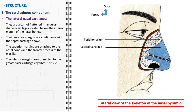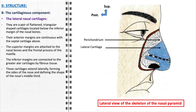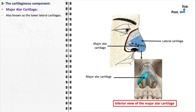This fibrous connection allows for flexibility and movement necessary for the functionality of the nose, particularly during facial expressions and breathing. The lateral nasal cartilages extend laterally, forming the sides of the nose and defining the shape of its middle third. The cartilaginous component of the nasal pyramid is further detailed by the inclusion of major alar cartilage, minor alar cartilage, and accessory nasal cartilages, each contributing to the nose's unique structure and functionality.